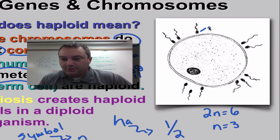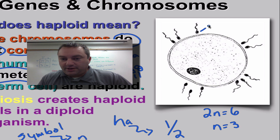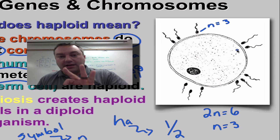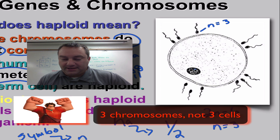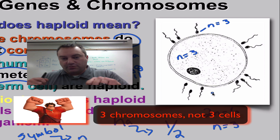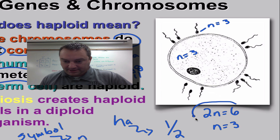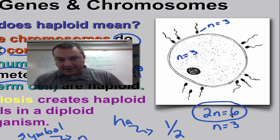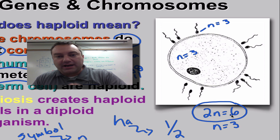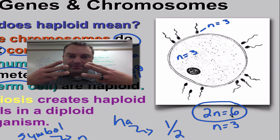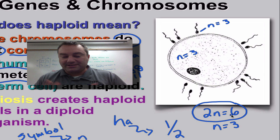Looking at this picture of the same creature — haploid number is three, diploid is six — in this sperm cell n equals three, so it's only carrying three chromosomes. In this egg cell, it's also haploid, so n equals three. When these two come together, there are six chromosomes total: 2n equals six, with three types of chromosomes, two of each kind — three from daddy and three from mom.